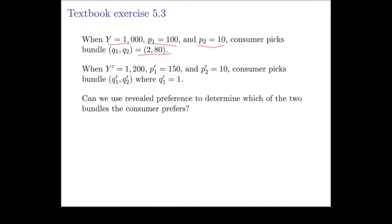The second scenario is where the consumer has income of $1,200, the price of good one has increased from $100 to $150, and the price of good two remains the same. The consumer picks some bundle (q1', q2'). All we know is that q1' is 1. We don't know what q2' is.